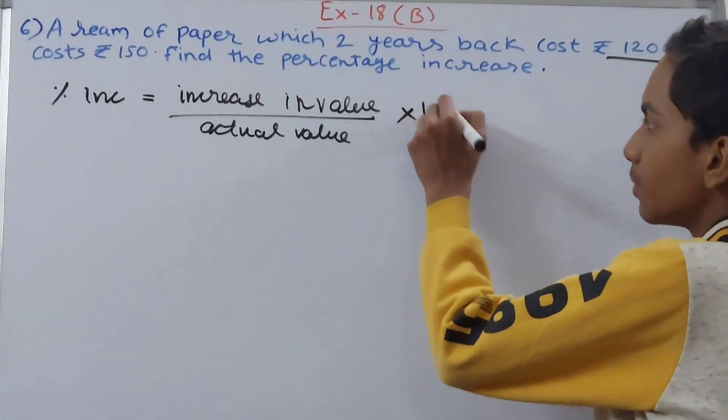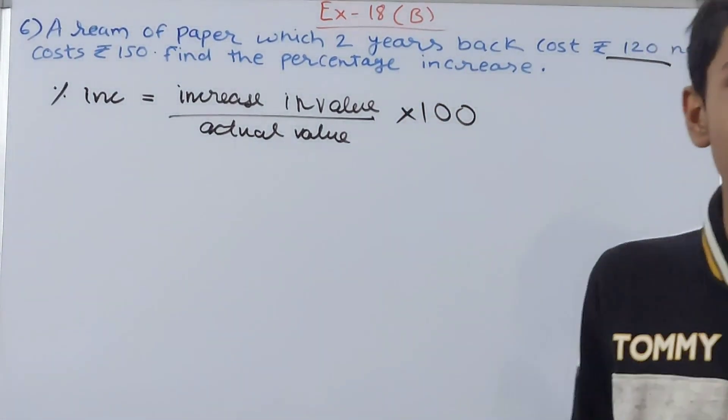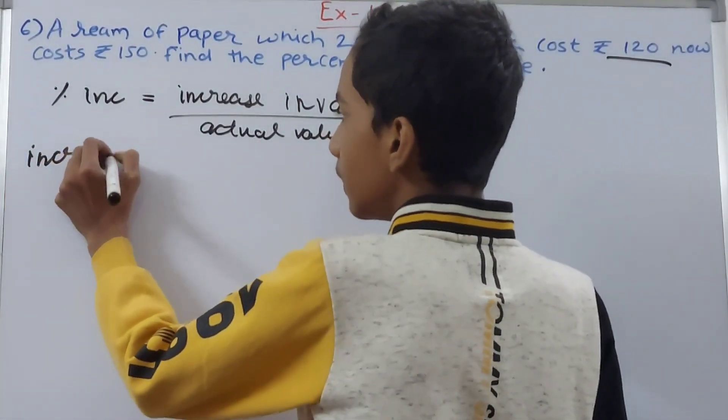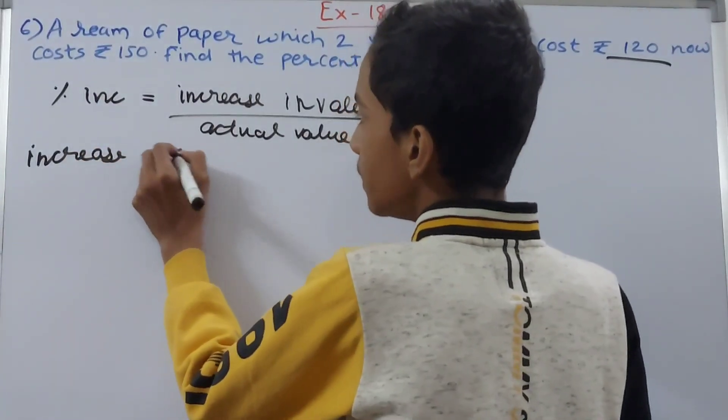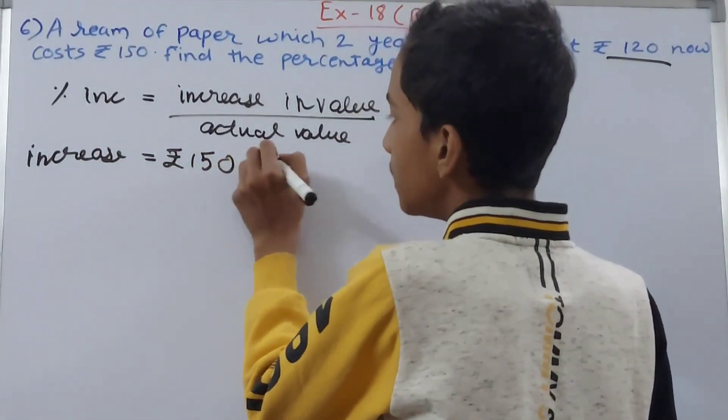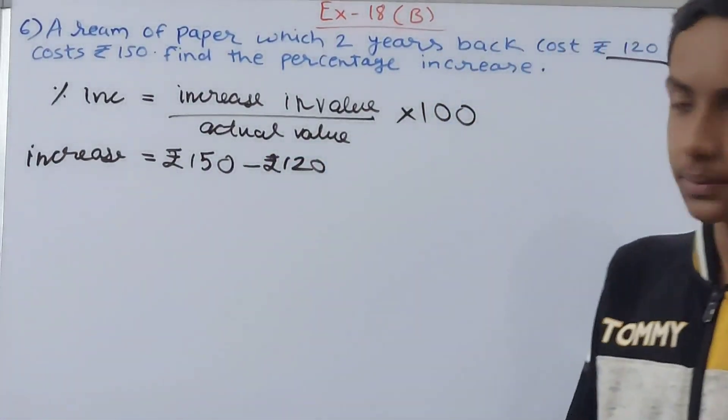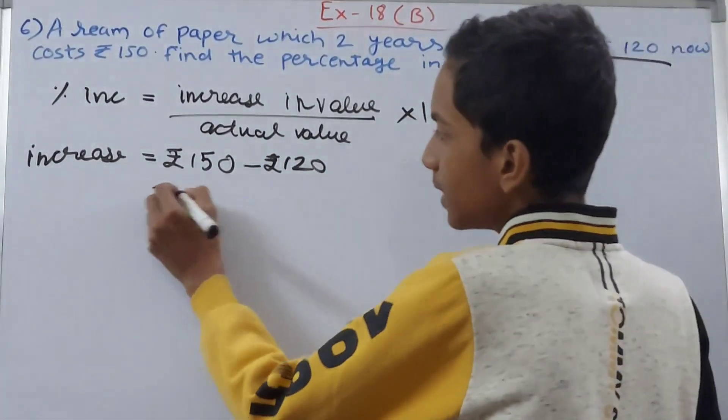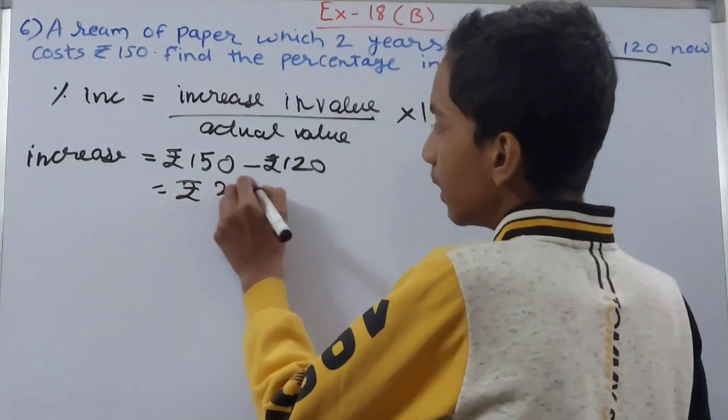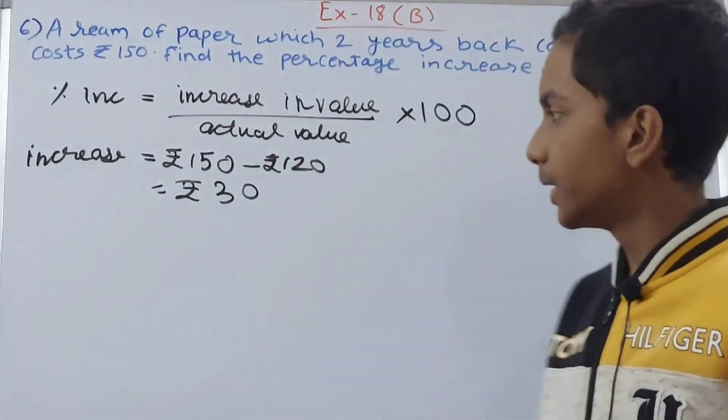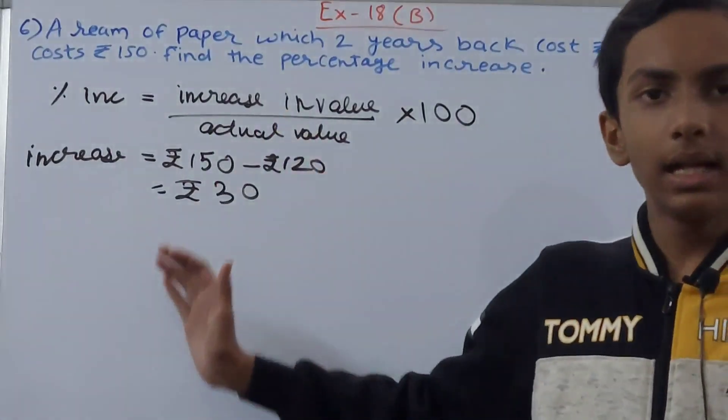Now we need to know the increase. The increase becomes rupees 150 minus rupees 120, which equals rupees 30. So the rupees that was increased in two years was 30 rupees.